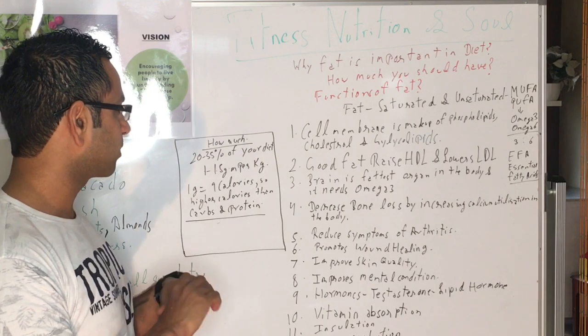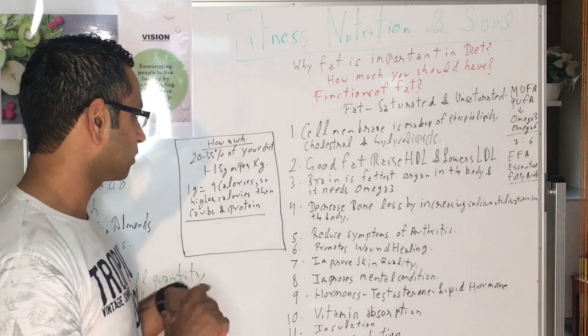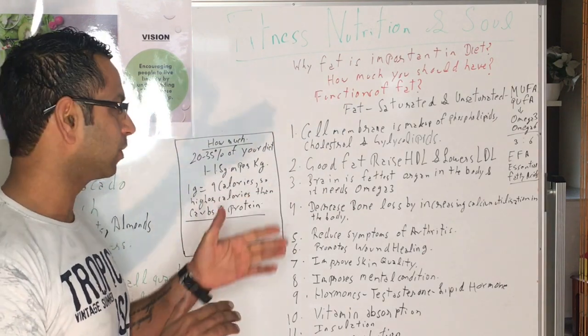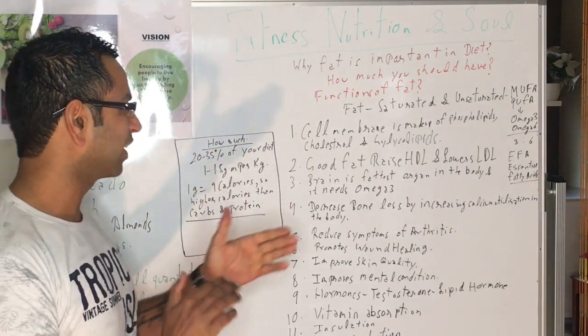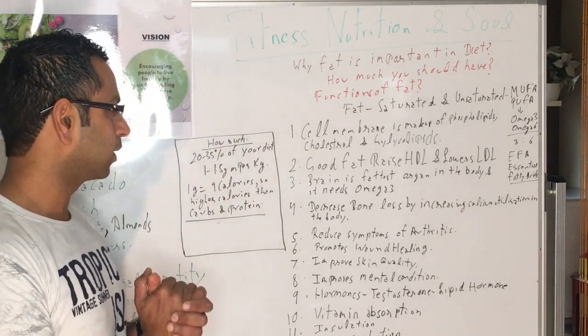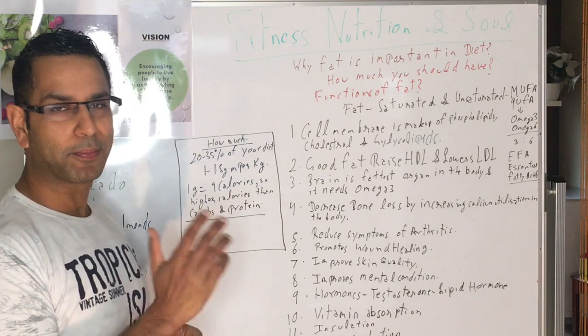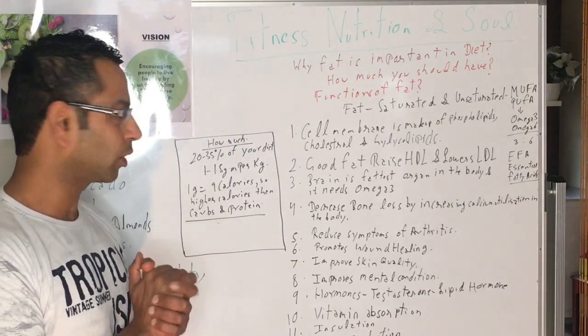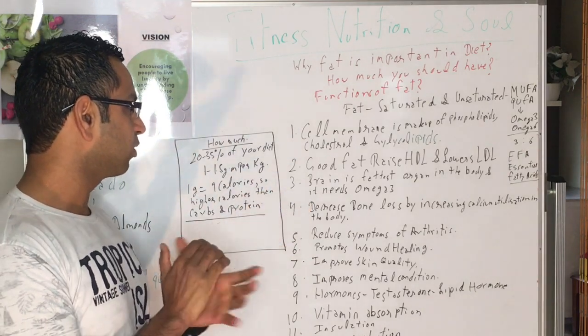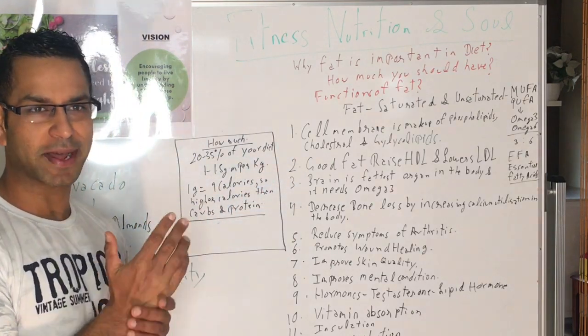The second function is if you're having essential fatty acids, it raises the HDL, which is high-density lipoprotein—that means it raises your good cholesterol level—and it lowers the LDL, low-density lipoprotein, which means it lowers your bad cholesterol level. The third point is that the brain is the fattest organ in the body and it needs omega-3. Your brain is nearly 60% fat. People in South India who eat fish are generally smarter because fish is higher in omega-3.